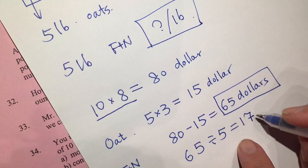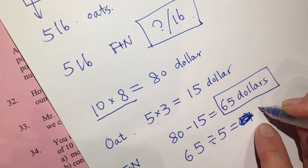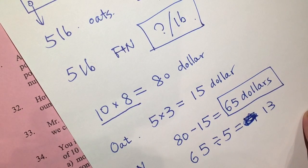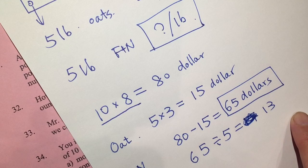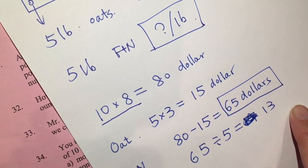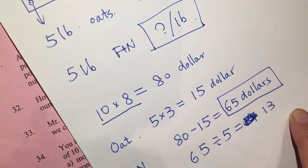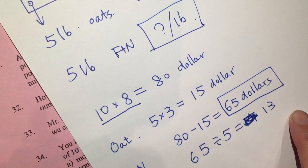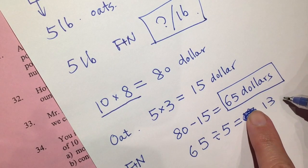Actually, wait — let me correct that. $65 divided by 5 equals $13 per pound.